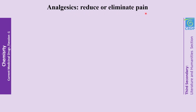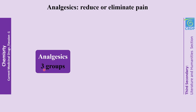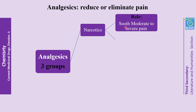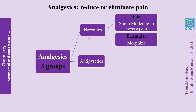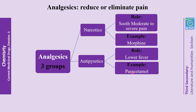What are analgesics? Analgesics are drugs used to reduce or eliminate pain. They are divided into three groups. First, narcotics, which are used to reduce and eliminate moderate and severe pain, such as codeine. Second, antipyretics, which are used to lower fever, such as paracetamol.